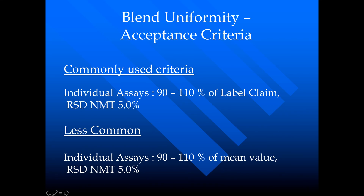Now let's talk about the acceptance criteria. The most commonly used criterion is that individual assay results from the ten different locations should be between 90 to 110 percent of the label claim, and the RSD should not be more than 5%. Another commonly used criterion is that individual assay should be between 90 to 110 percent of the mean value, and RSD must not be more than 5%. Note the difference: one uses label claim as the reference and the other uses the mean value.